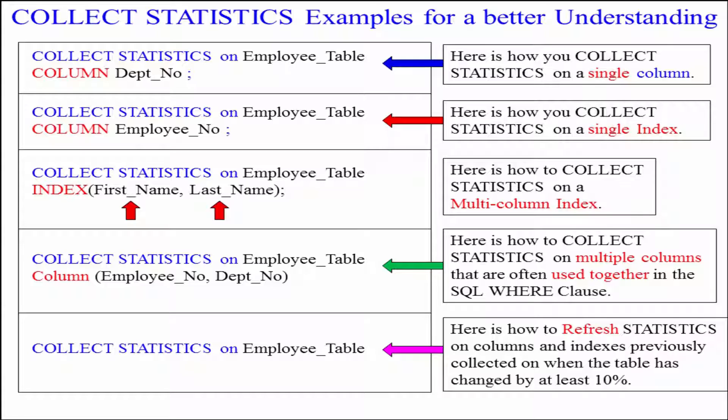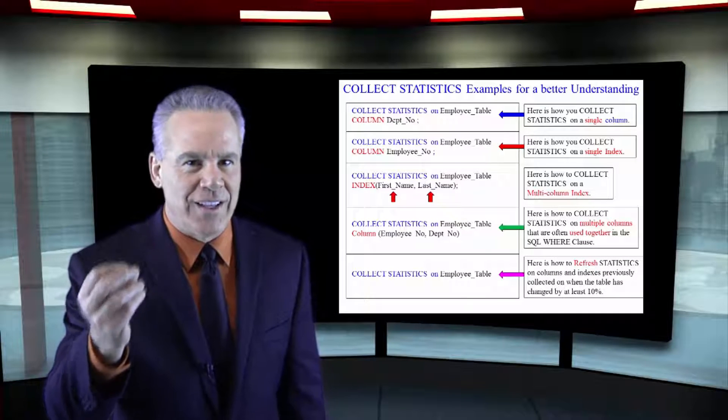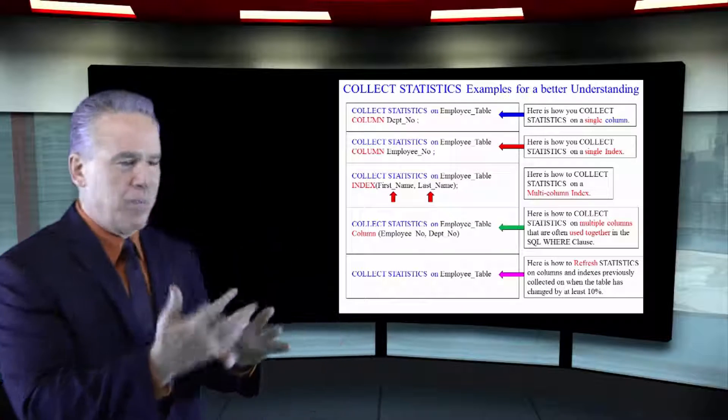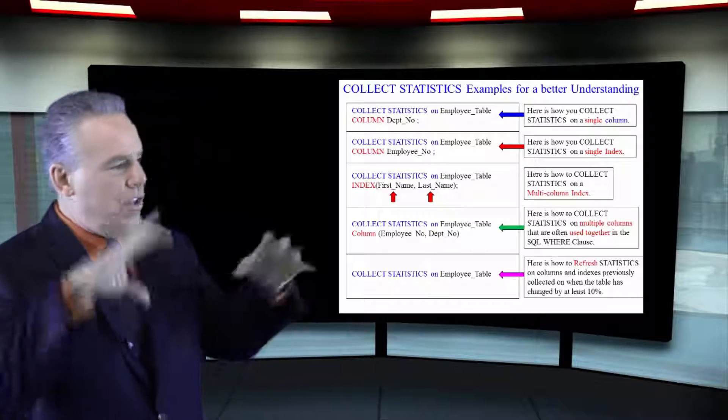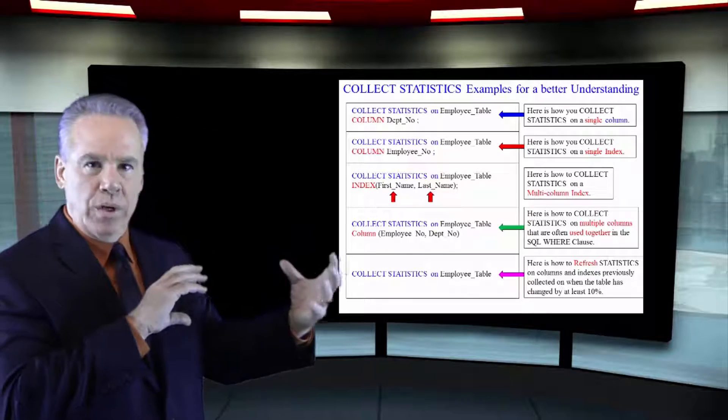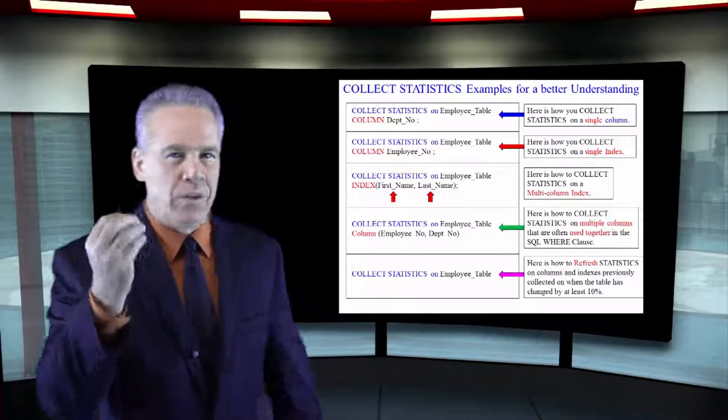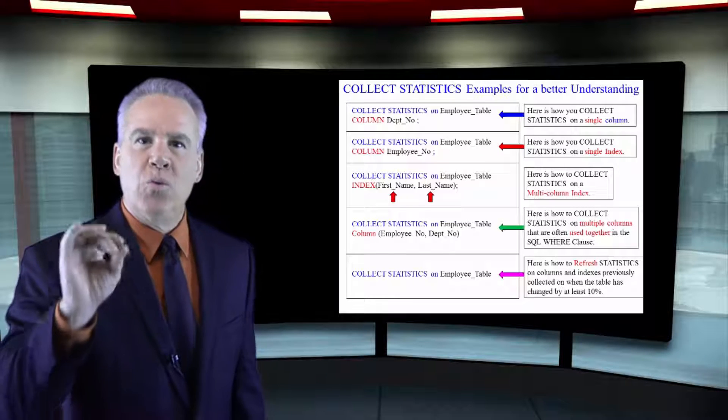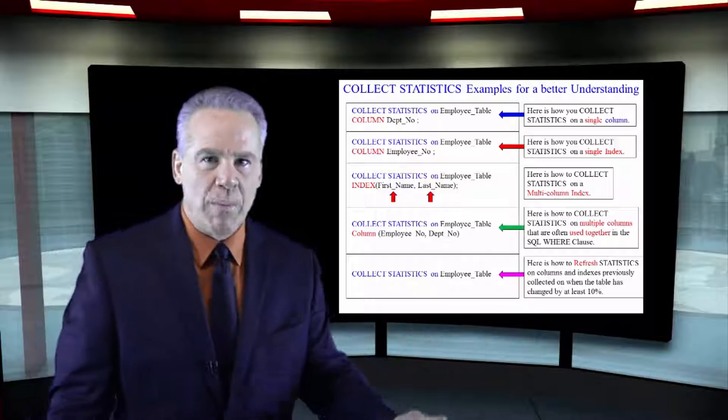That's how you refresh statistics. So, let's look at this. We collected on Depno, Empno, the index, first name and last name, and then the combined columns of employee number and Depno. When we load more data later, the rule of thumb is about 10% of the data changes, you recollect statistics. And you do so by saying, collect statistics on the table name. In this case, it was employee table.